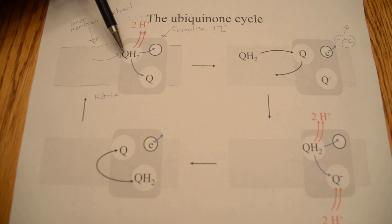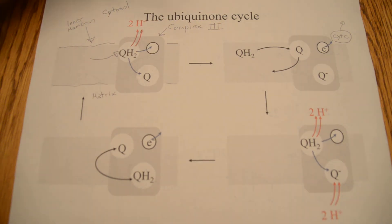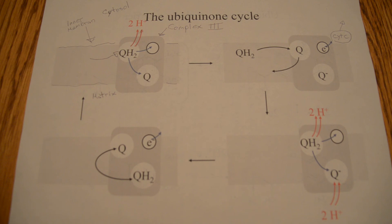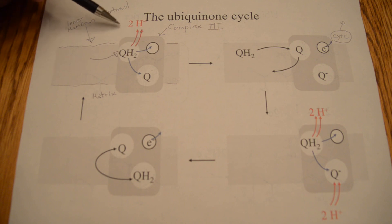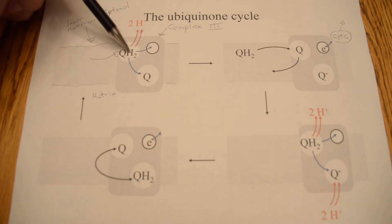This reduced one will transfer back to here, and so on and so forth. Yeah, the only thing that doesn't really make sense about this model is that it's saying that four protons are expelled for every ubiquinone that is reoxidized.